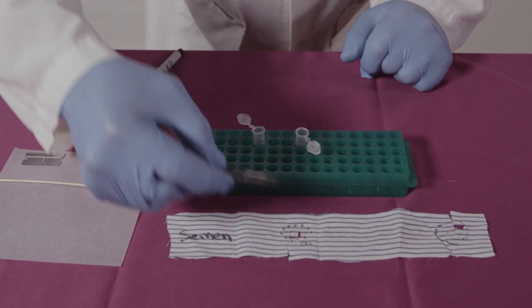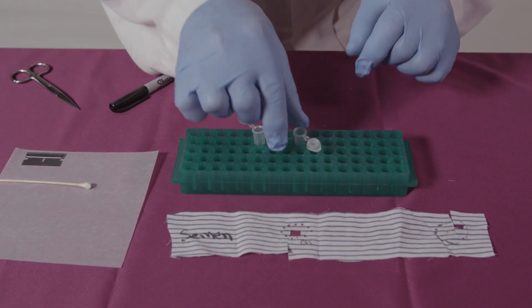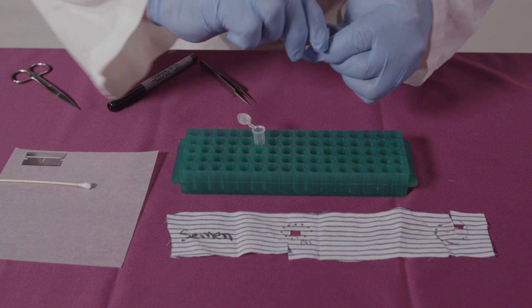Prepare an extract of a stain by cutting out a five millimeter by five millimeter area and place the cutting in a clean microfuge tube and label.